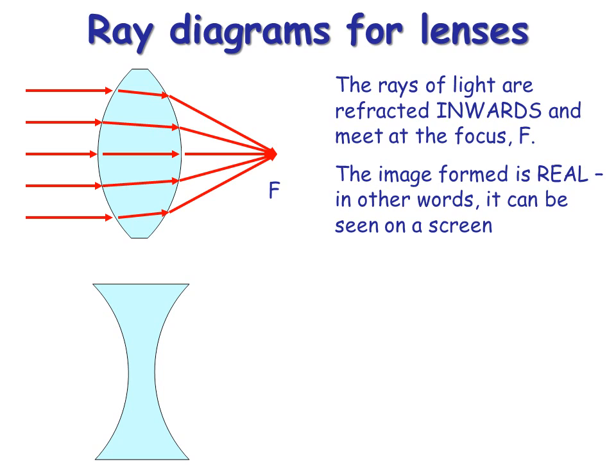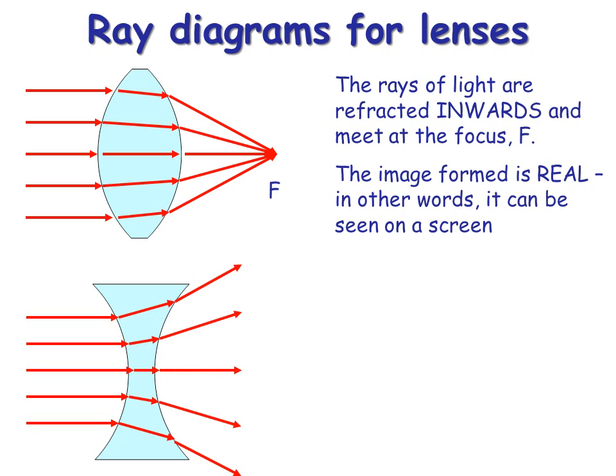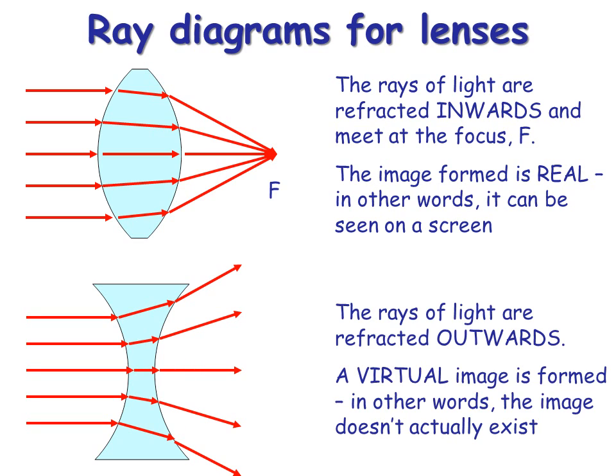For a concave lens, it acts very much like a convex mirror. Where the rays of light are diverging. They're spread apart. And therefore, they won't meet at a point. So you've got to come backwards and find the focal point behind. Which means it's a virtual image is formed.